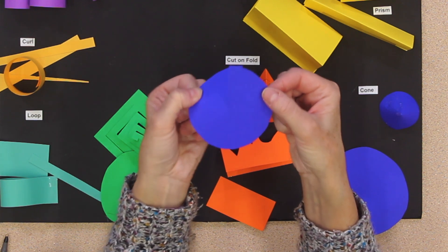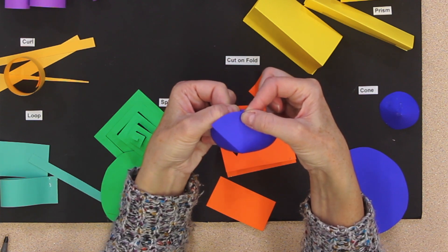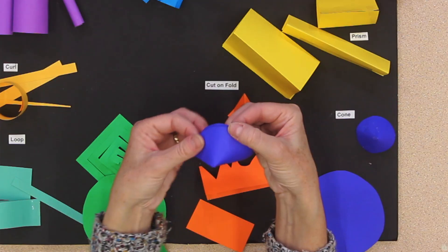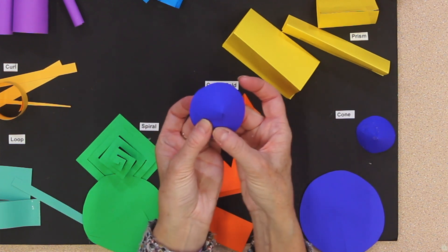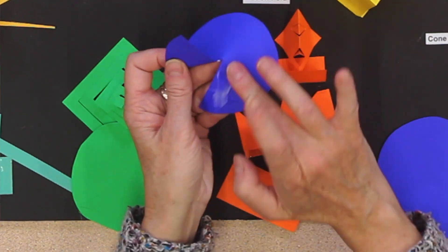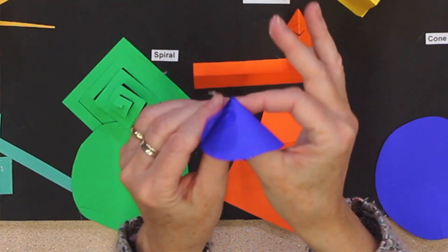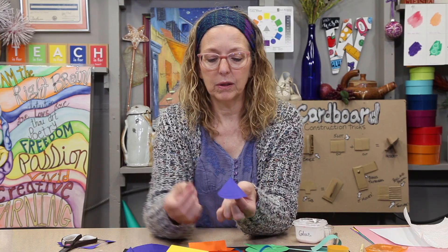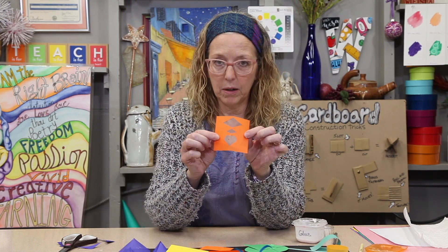Cut one cut to the center of my circle. Listen carefully. I'm going to take the, where the cut is and I'm going to overlap, overlap one side onto the other. I'm going to pull it around until I get the size cone that I want. Now, I can glue it. This is kind of a cool cone because it leans to the side. I like that.